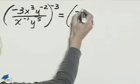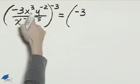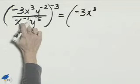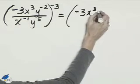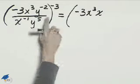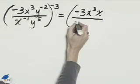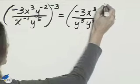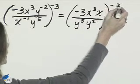So the negative 3 will stay where it is. It's not a negative exponent. x to the 3rd will stay where it is as well. But x to the negative 1 will come up and become x to the positive 1 power. In the denominator, we'll keep y to the 5th, and y to the negative 2 will go down because it needs to become positive as well. So we'll have y to the 5th and then y squared. And we'll keep this negative 3 on the outside.